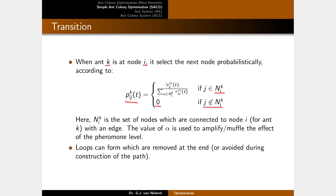Otherwise the probability is calculated as follows: the numerator is the pheromone level on the edge connecting node i to node j, tau_ij, raised to the power of alpha. Alpha is a constant that either amplifies or muffles the effect of the pheromone level. We divide this by the sum of all pheromones on all edges leaving node i — for all nodes connected to node i, take the pheromone level raised to the power of alpha and sum them all together. This gives the probability of ant k moving from source node i to destination node j.